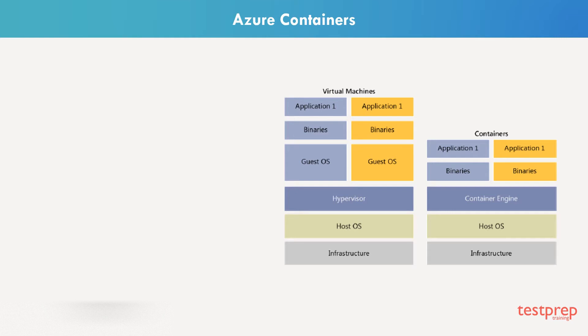Once the machine is ready, you will then have the dependencies installed, and then the application sits on top of the dependencies. We create multiple layers, starting from the application dependencies. Then comes the operating system, and finally the hardware.